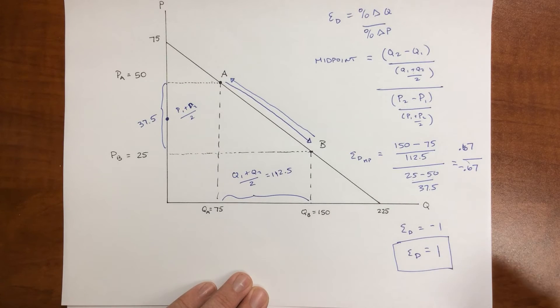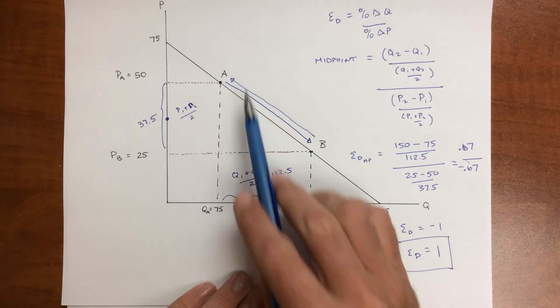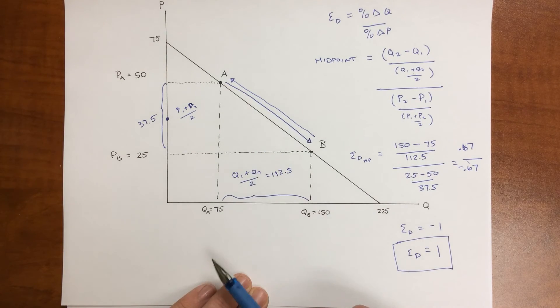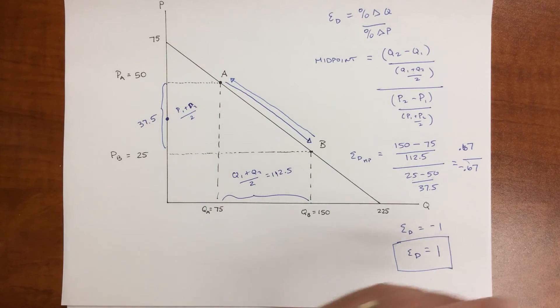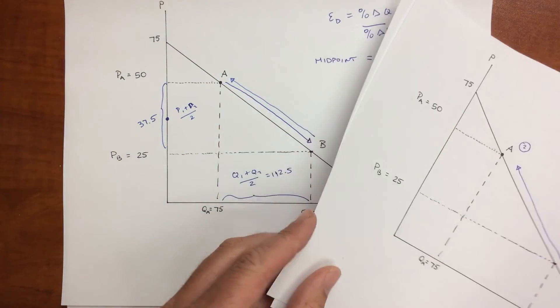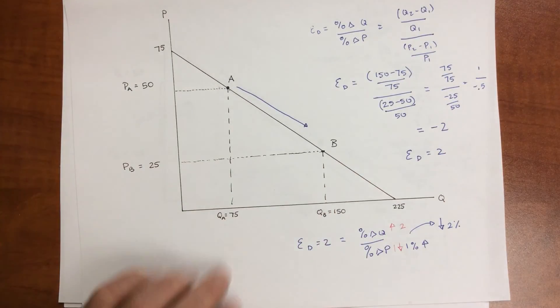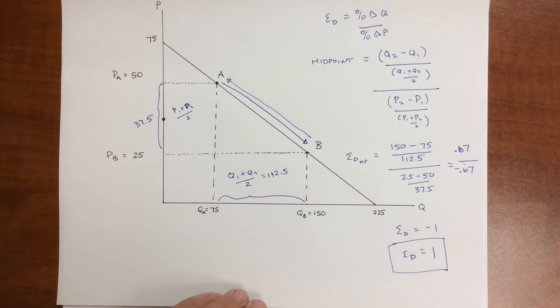So that's one of the strengths of using the midpoint method to calculate the elasticity of demand: it doesn't matter if you go from A to B or B to A, you get the exact same answer. In this case, it's 1. And if we compare that to our previous answers, going from B to A we got 0.5, A to B we got 2. And what we'll find is that the midpoint method gives the elasticity of demand about the midpoint of the other methods.